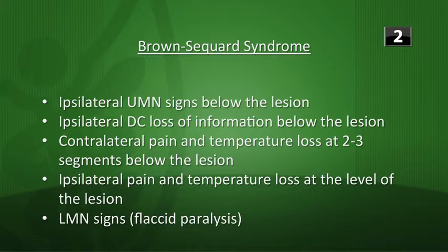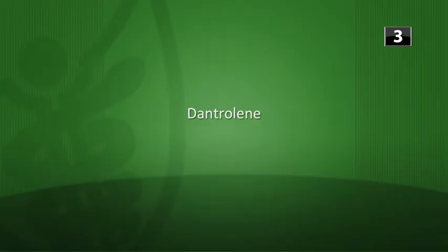So both upper and lower motor neuron signs, because the lesion affects the corticospinal tract and the anterior horn. There's also loss of pain, temperature, and all sensation ipsilaterally at the level of the lesion. That's a hard question - go through it a couple of times. Next, what drug prevents the release of calcium from the sarcoplasmic reticulum of skeletal muscle? The answer is dantrolene.